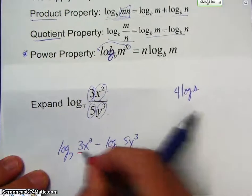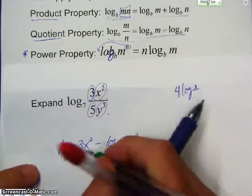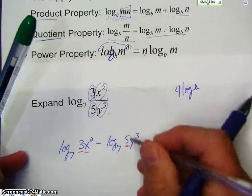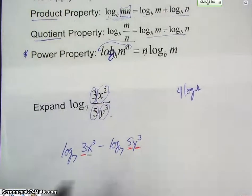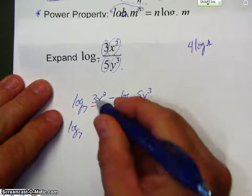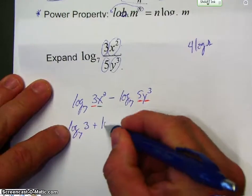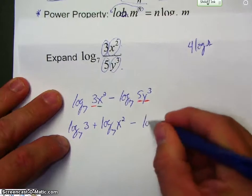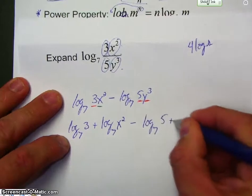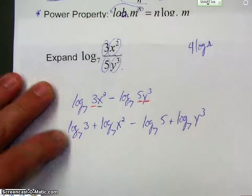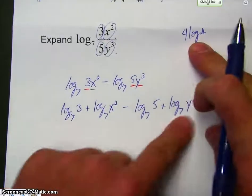Now, I'm going to apply the product property to both of these. As you notice here, I've got 3 and an x, and a 5 and a y. So, we've got log base 7 of 3, plus log base 7 of x squared, minus log base 7 of 5, plus log base 7 of y cubed. So, here's my 4 logs.